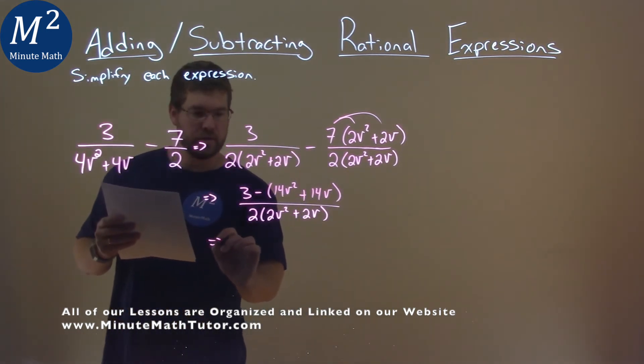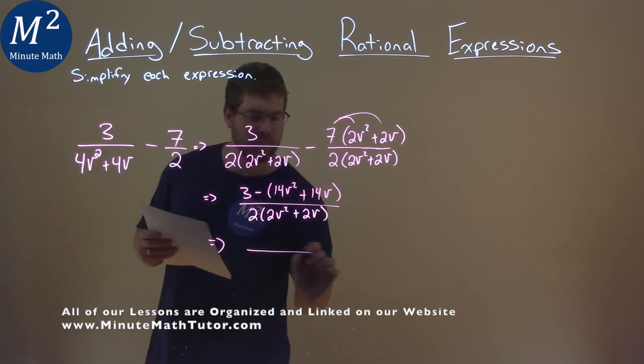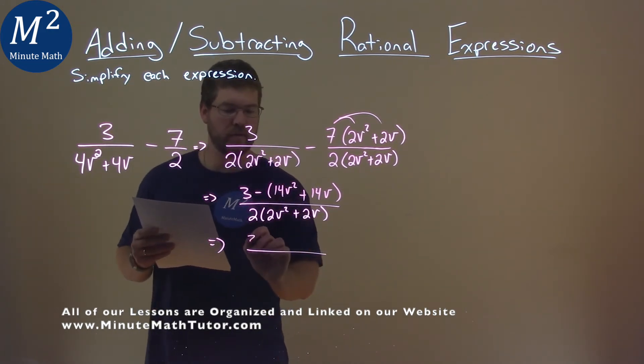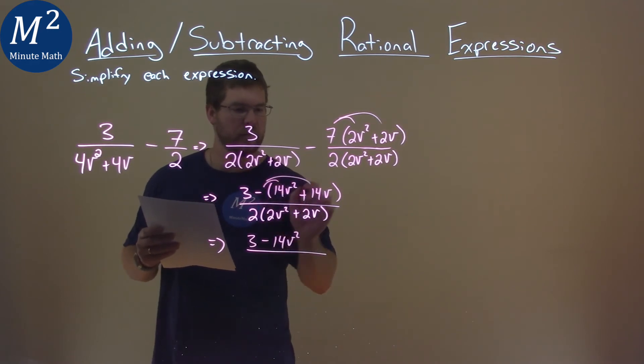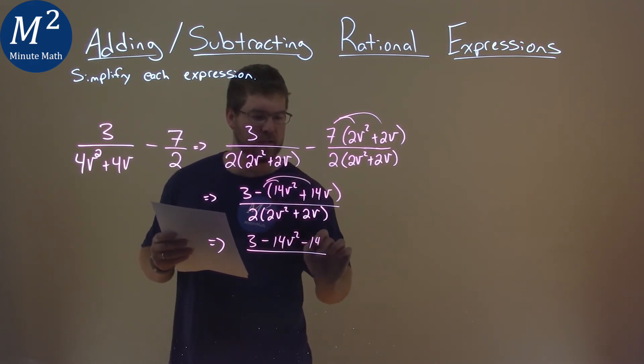Now, continuing on the numerator, we can distribute this minus sign. So we have 3 minus 14v², and then distribute that minus sign again to minus 14v.